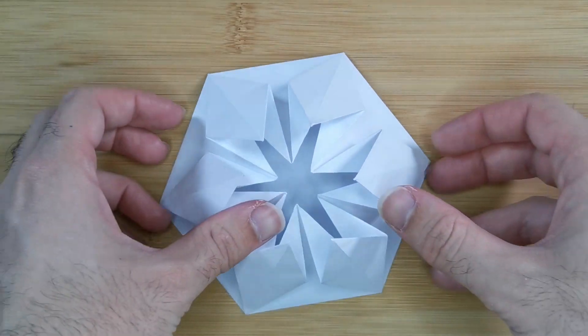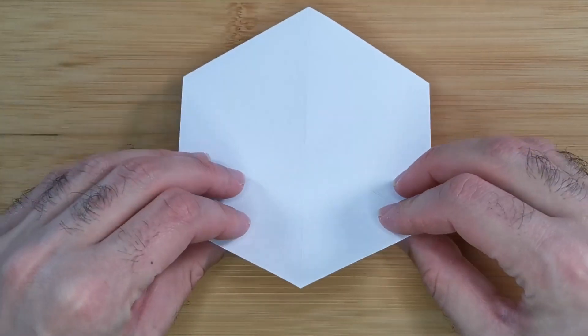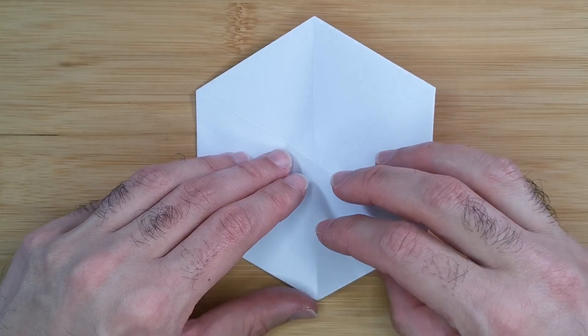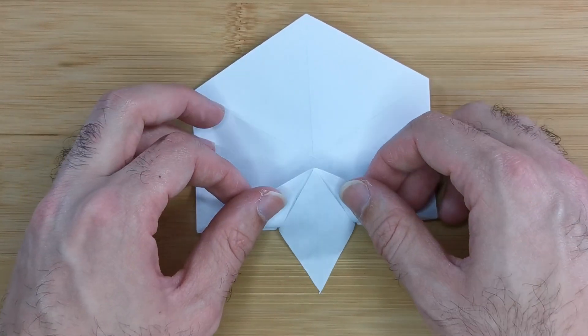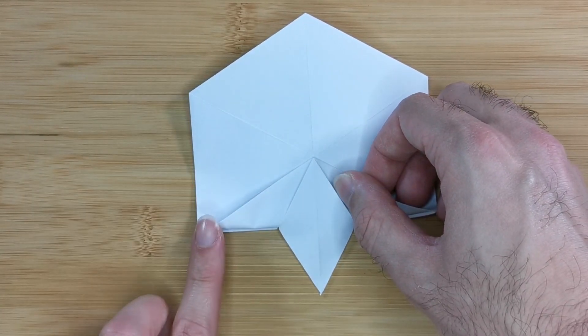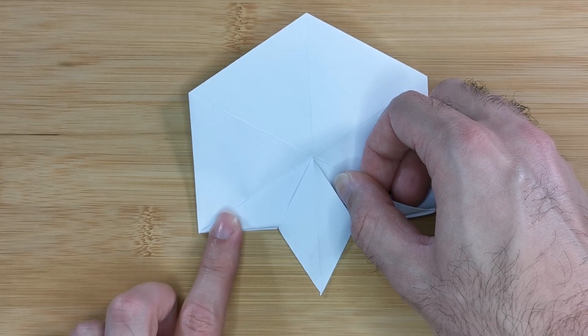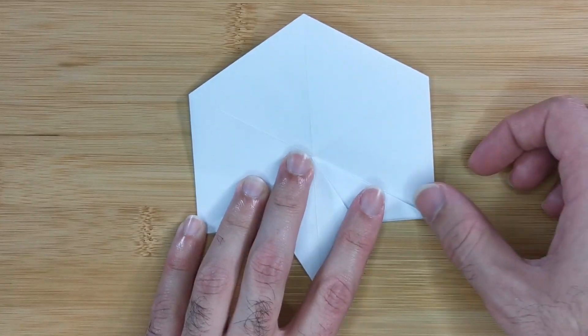Here is my snowflake base and we're going to flip it over and fold each corner to the center, making sure that this diamond sticks out and does not get creased down the center.